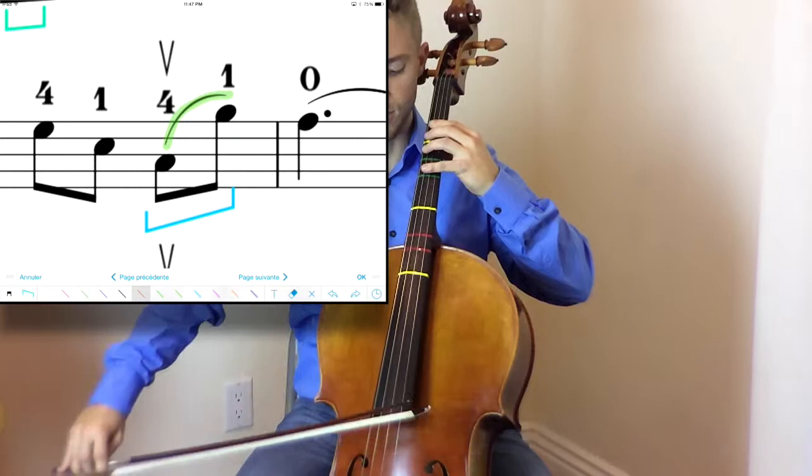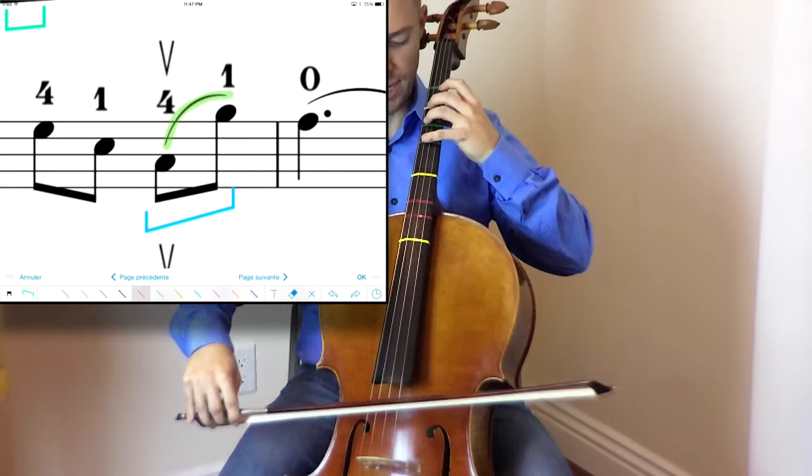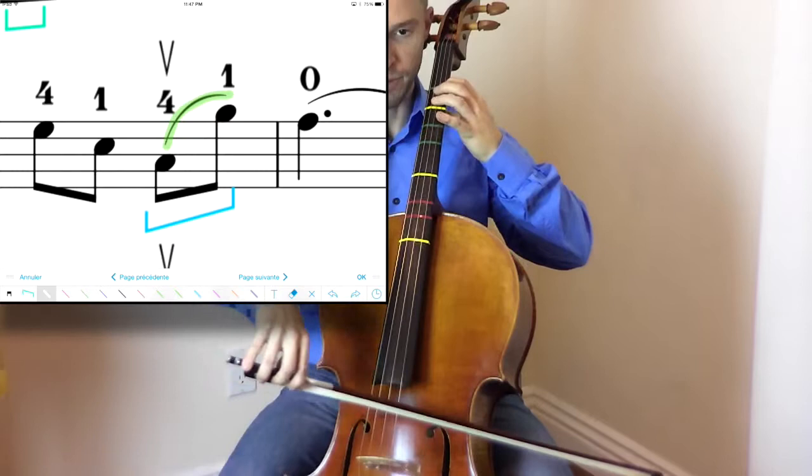And practice that. Again, don't start here for your up bow. Start in the middle because you're not going to be that far up. Four, hop. And if you can, place both fingers. And if you can't, it's okay. Place, have your one ready, push down your four, hop.